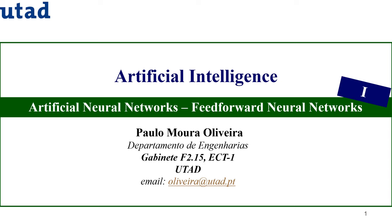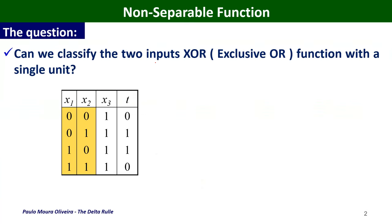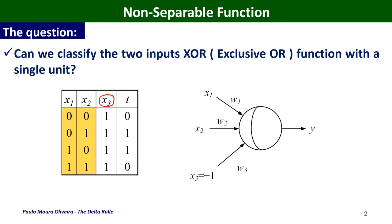In this video we are going to speak about artificial neural networks, and this is the first video for feedforward neural networks. The question here is: how can we classify the two-input XOR function with a single unit? We have the table for the XOR function, and we are going to consider that the bias input is equal to plus one. The type of neuron we are going to use will use a sigmoidal function.